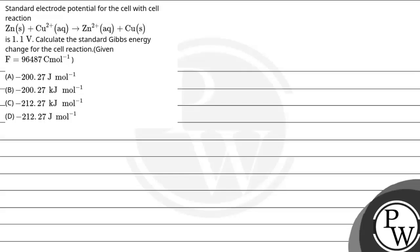Hello, let's read the question. The question says standard electrode potential for the cell with cell reaction Zn(s) + Cu²⁺(aq) → Zn²⁺(aq) + Cu(s) is given to us, that is 1.1 volt.